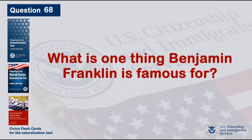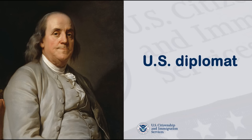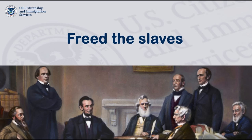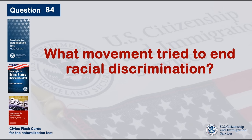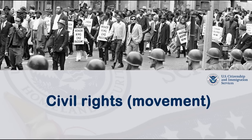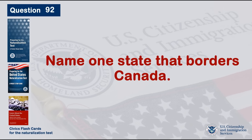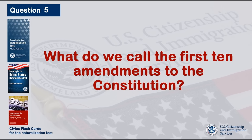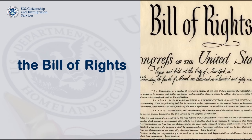What is one thing Benjamin Franklin is famous for? U.S. diplomat. What did the Emancipation Proclamation do? Freed the slaves. What movement tried to end racial discrimination? Civil rights. Name one state that borders Canada. New York. What do we call the first ten amendments to the Constitution? The Bill of Rights.